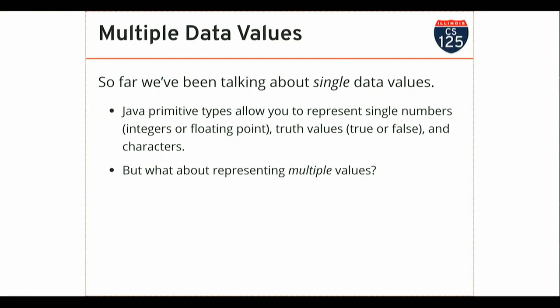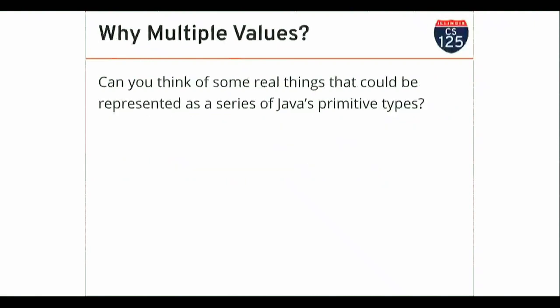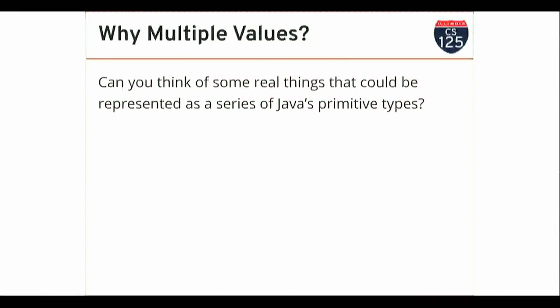But what about if we want to work with multiple values? Text is not very useful if you can only store one character — one character from a book doesn't tell very much of a story. One measurement of temperature doesn't tell a story. The measurement of sound pressure at one point at one time doesn't tell a story, doesn't sing a song. In order to do that, we need to expand our repertoire. So what are some different ways we could represent data around us using multiple values of these primitive types?